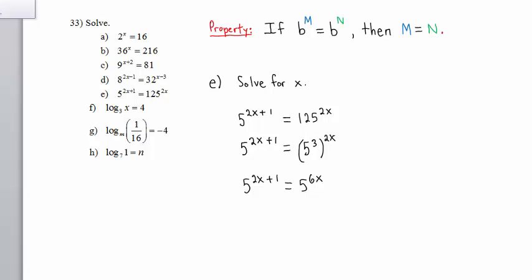So we have 5 to the 2x plus 1 equals 5 to the 6x. We are in this situation. Therefore, it follows that 2x plus 1 must equal 6x. Subtracting 2x from both sides, we have 1 equals 4x. Dividing both sides by 4, we get the solution x equals 1 fourth.